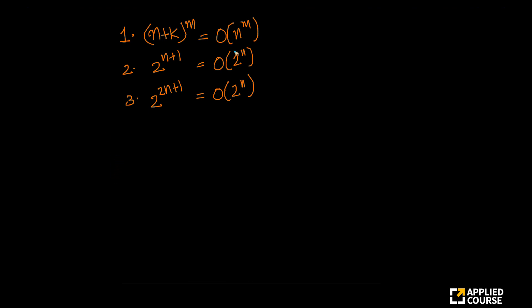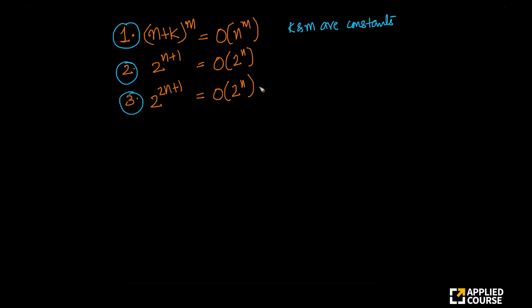This is a very interesting question, slightly tricky, but we can solve it. Imagine we are given these three equations. The first one is (n + k)^m is Big O of n^m. Here k and m are constants — that is important to state. The second one is 2^(n+1) is Big O of 2^n. The third one is 2^(2n+1) is Big O of 2^n. The question is: which of these three statements are true?